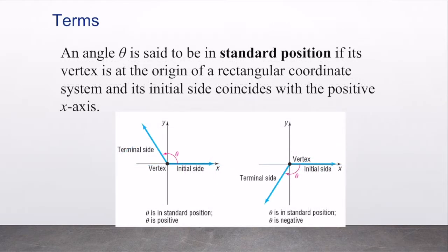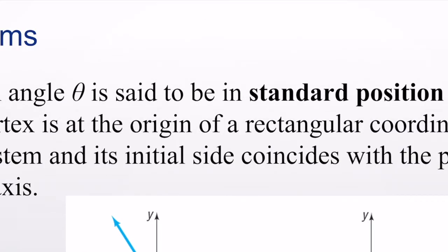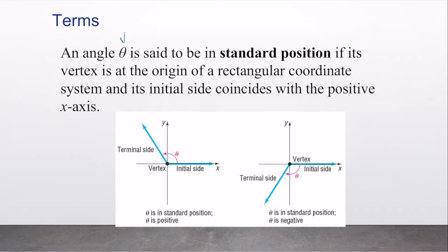An angle theta – this is the Greek letter theta – is said to be in standard position if its vertex is at the origin of our x,y coordinate plane, and the initial side coincides with the positive x-axis. So our initial side is on our x-axis where it's positive, over here.